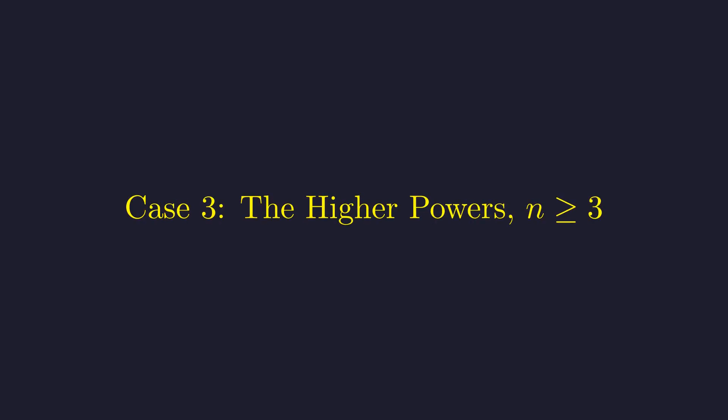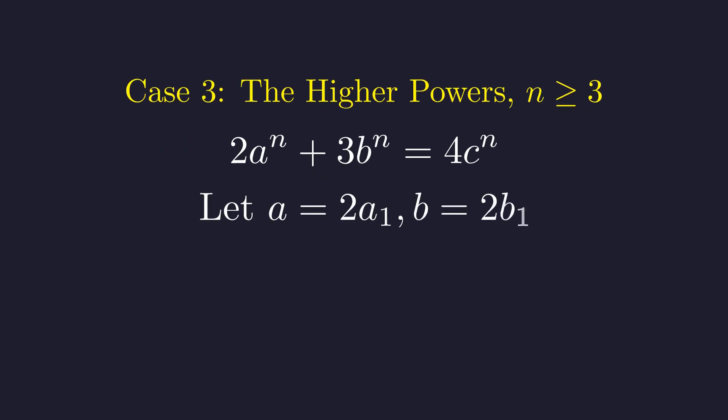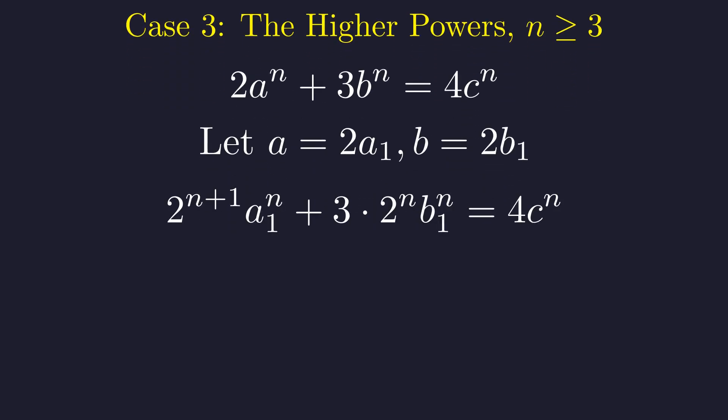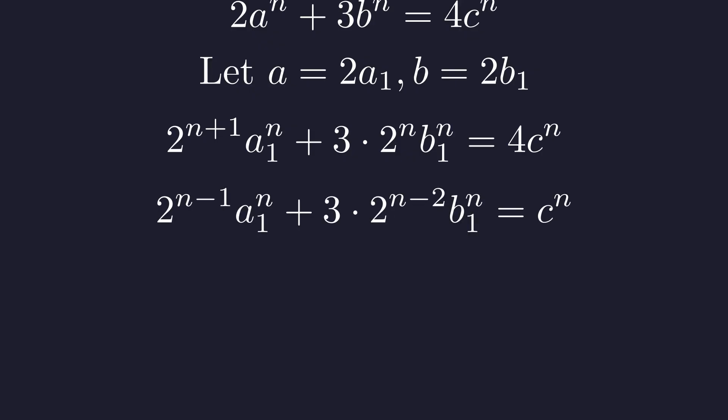So let's consider the case when n is greater than or equal to three. We also know from our modular four analysis that a and b must both be even. As before, let a equal two times a₁ and b equal two times b₁. Substituting and expanding, we get this equation. Dividing by four gives us this form. Now, since n is at least three, both exponents n minus one and n minus two are positive. This means both terms on the left are even.